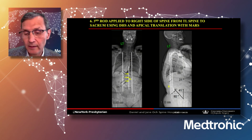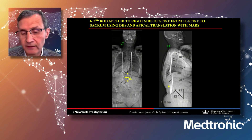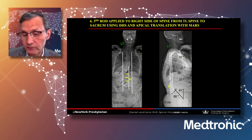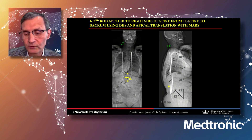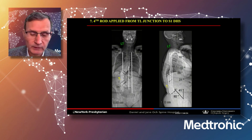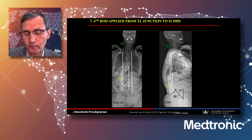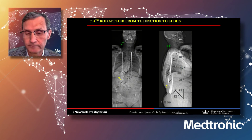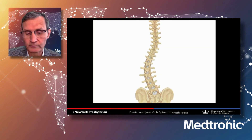I then place a third rod — a medial concave rod in the lumbar spine — using reduction screws to translate and derotate the lumbar apex. The fourth rod is applied as a seventh maneuver: an in-situ rod for stability across the thoracolumbar junction and lumbosacral junction. Here's a video highlighting these correction maneuvers.